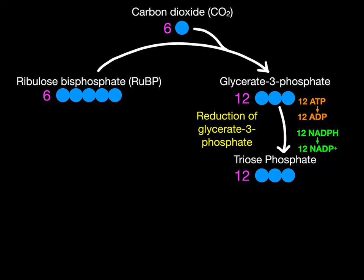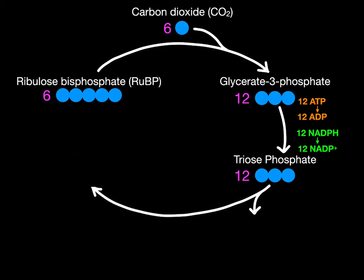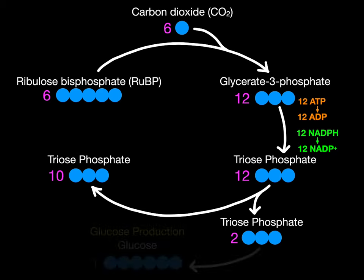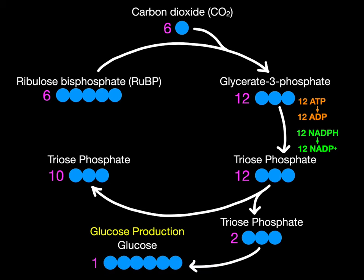When the glycerate three phosphate is reduced into triose phosphate, since triose phosphate is also a three carbon molecule, it stands to reason that there would be 12 of them. We can see how two triose phosphates go on to form glucose — since triose phosphate is a three carbon and glucose is a six carbon, two triose phosphates would form one glucose molecule.